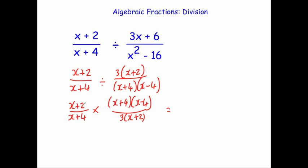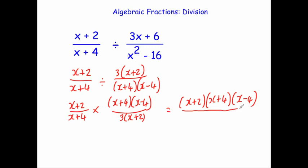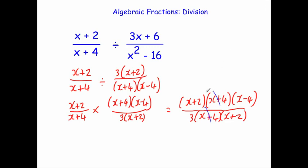Multiplying the numerators together gives (x plus 2)(x plus 4)(x minus 4), and the denominator gives 3(x plus 4)(x plus 2). Now we cancel down: (x plus 4) cancels from numerator and denominator, and (x plus 2) cancels from numerator and denominator, leaving us with (x minus 4) over 3. And that's our final answer.